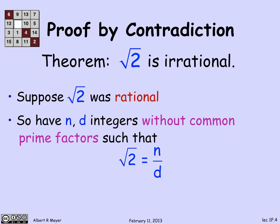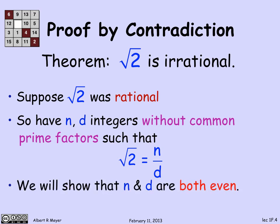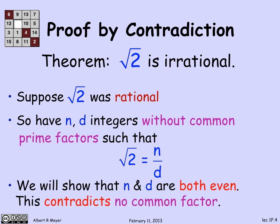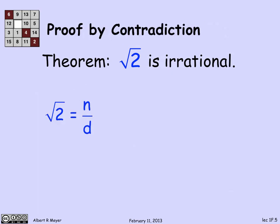From this assumption, I'm going to prove that both n and d are even. And that is an immediate contradiction, because then both n and d have a common factor of 2. So all I've got to do is prove that n and d are both even if the square root of 2 equals n over d. Starting with that assumption, let's multiply both sides by d and get that the square root of 2 times d equals n.